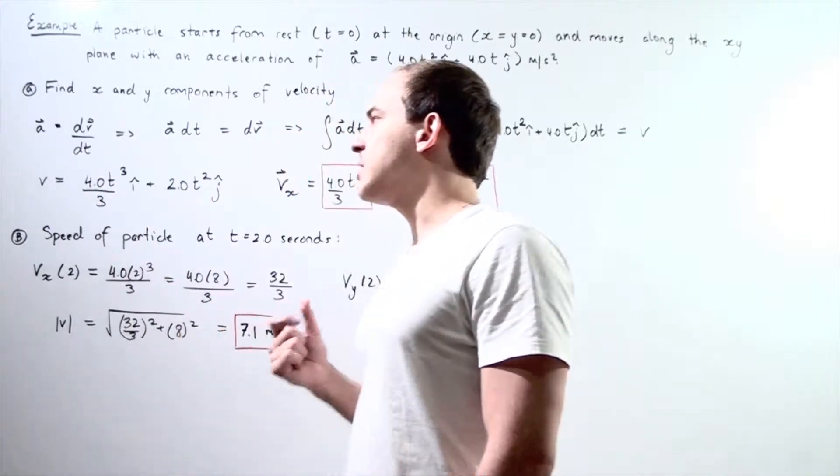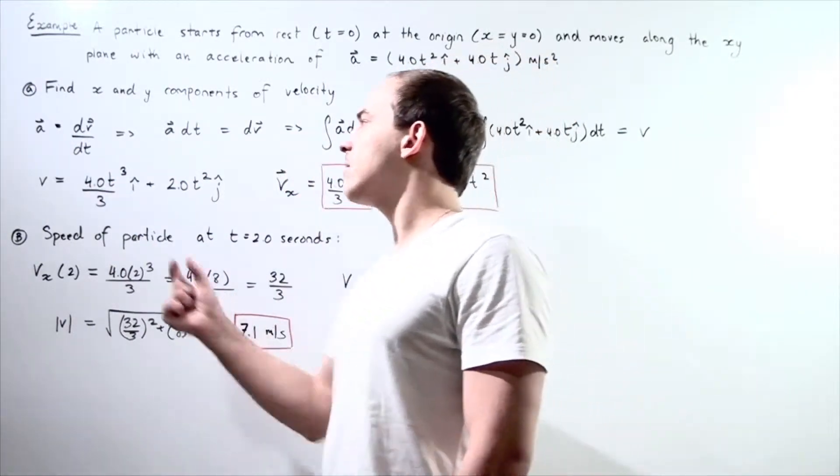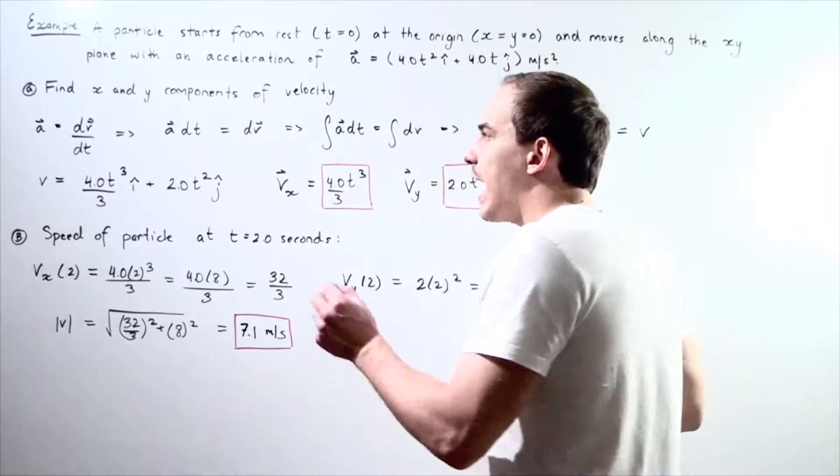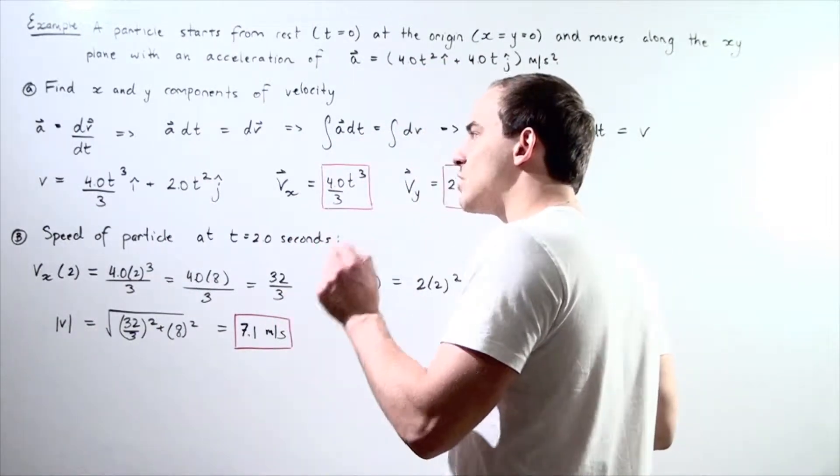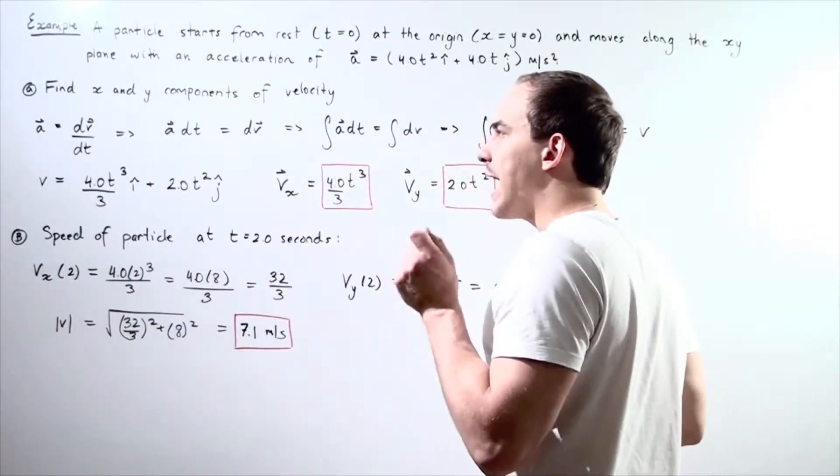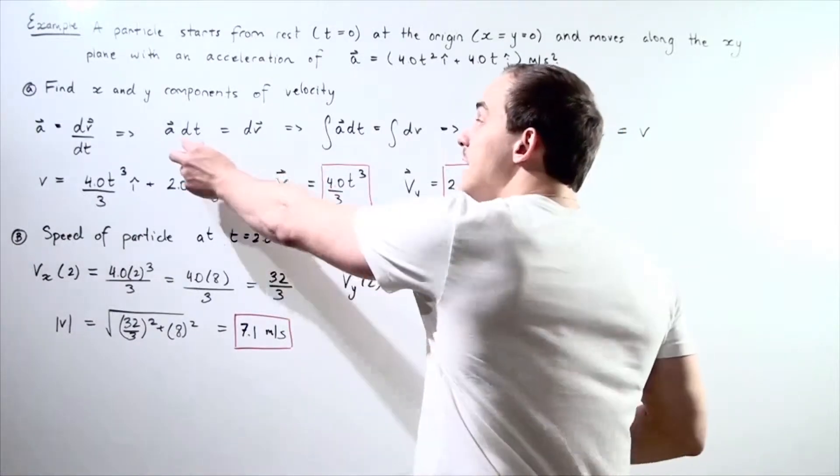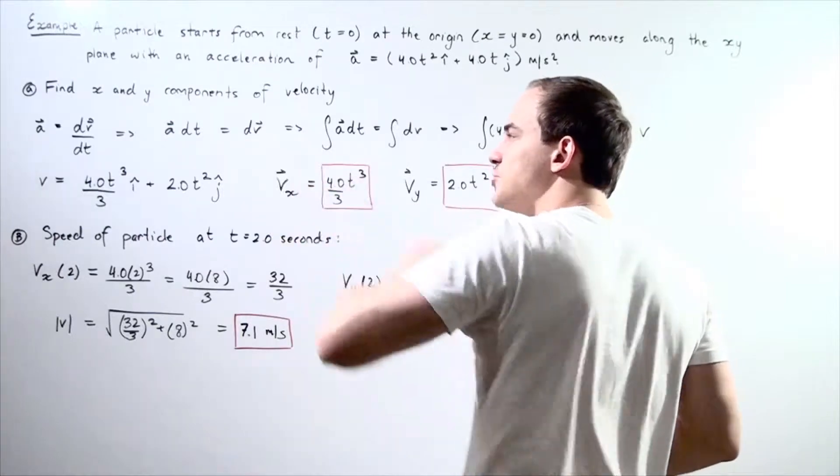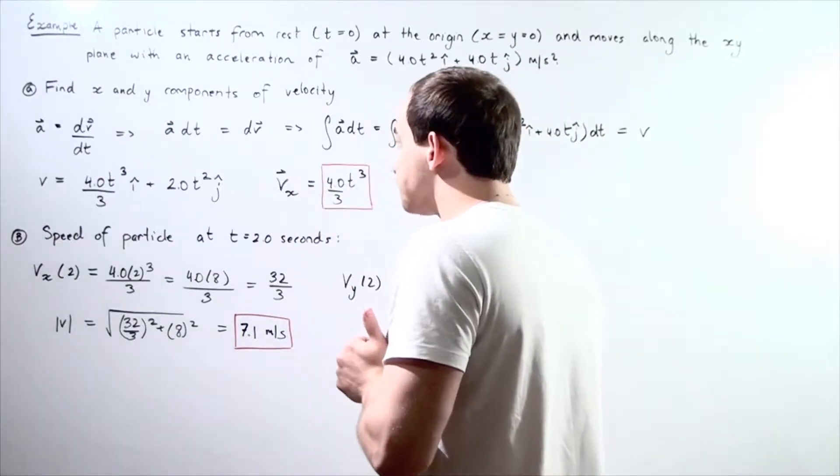So let's take this equation and rearrange it. Let's bring our dt term to the left side. So we get our instantaneous acceleration vector multiplied by our infinitely small change in time equals infinitely small change in velocity vector.